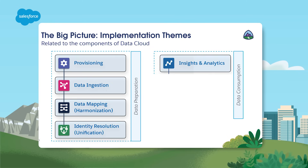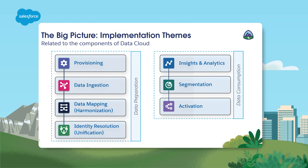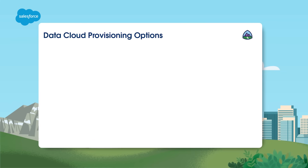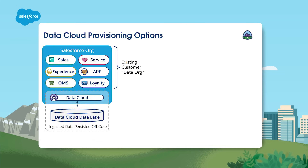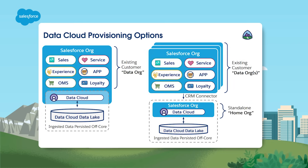Also shown here are the implementation steps related to data consumption: segmentation, activation, as well as insights and analytics. One of the first big decisions that must be made is where to provision Data Cloud. The two options available are to provision Data Cloud into an existing Salesforce core org, or to create a new org specifically for Data Cloud. When provisioning into an existing org, the Data Cloud application is added to the existing org along with the required additional permission sets needed to access and set up Data Cloud. Provisioning a standalone Data Cloud home org means the Data Cloud application is provisioned to a separate Salesforce org with similar requirements for access and setup.